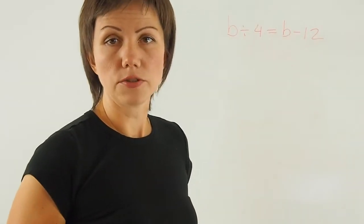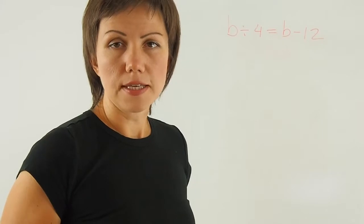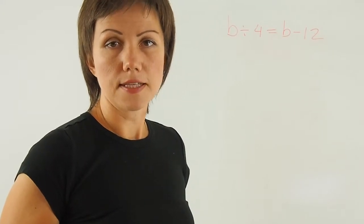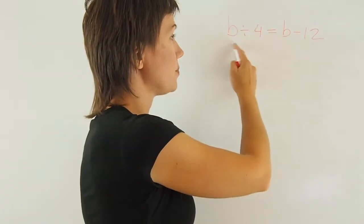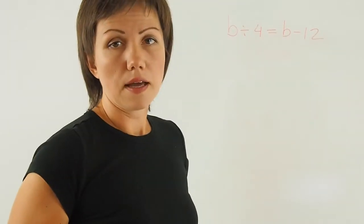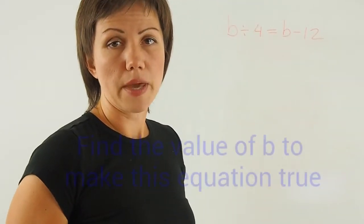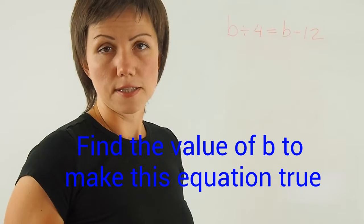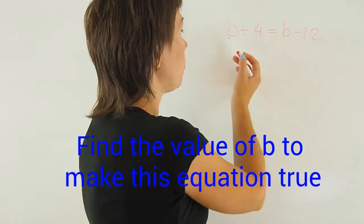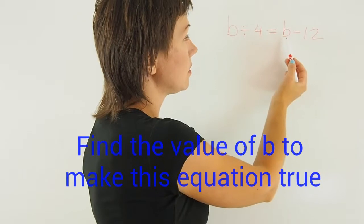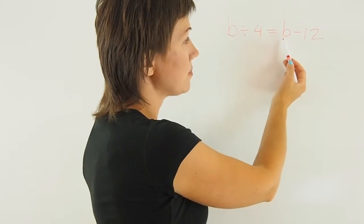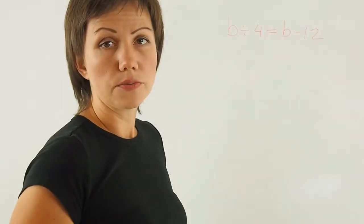An equation is an equality that contains an unknown, in this case b, that has to be found in order to make this equality balanced. So what do you need to divide by 4 to make it equal to something, subtract 12?